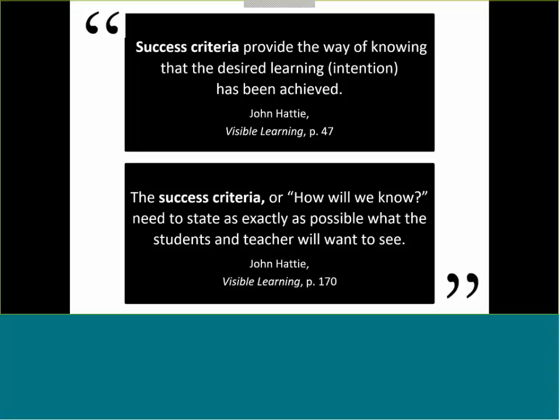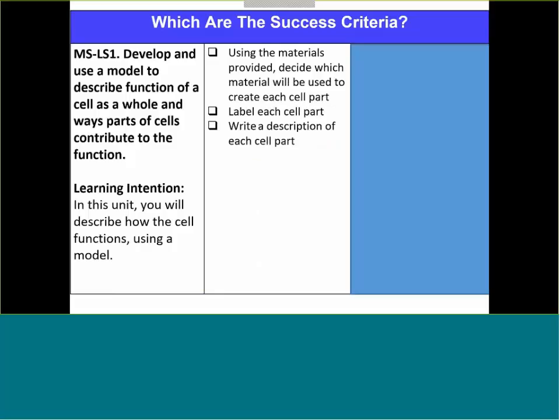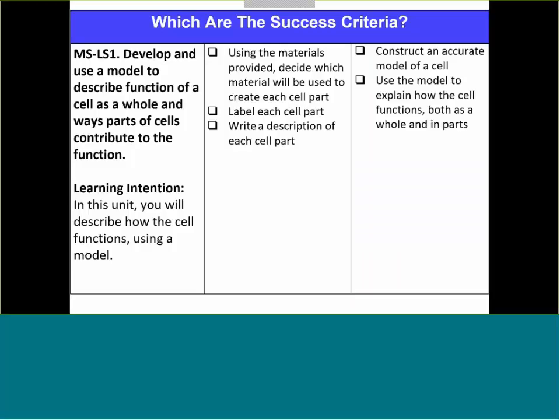I'll give you a little chance to decide which one you think the success criteria might be. The learning intention you saw earlier: 'You will describe how the cell functions using a model.' Which one shows a list of those success criteria? The reason the second one is the more appropriate success criteria list is because the first option talks about 'using materials provided' and 'decide' — you can't measure decide. Labeling each cell part is not a very high-level skill. We feel like the second option gives more clarity and purpose and also broadens what's expected of students.